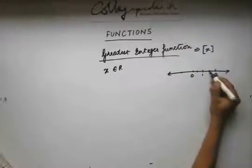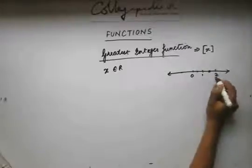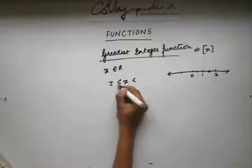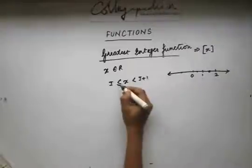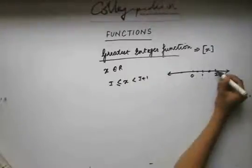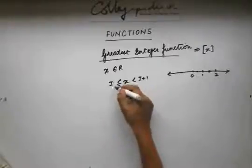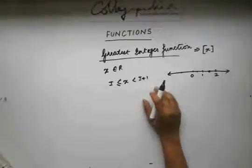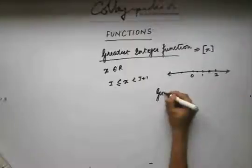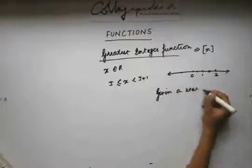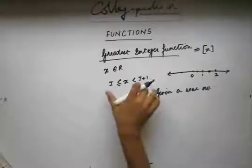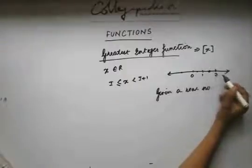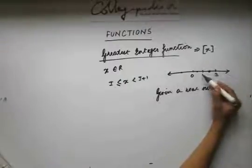A real number lies between two integers — it always lies between two integers. So I can write that x lies between two integers, and this equality sign holds when x is itself an integer. If x is 2, then i is 2. Given a real number, I can find the two integers between which the number lies. For example, if I am given 1.5, I can say that 1.5 lies between 1 and 2.